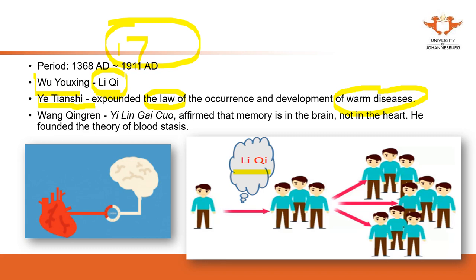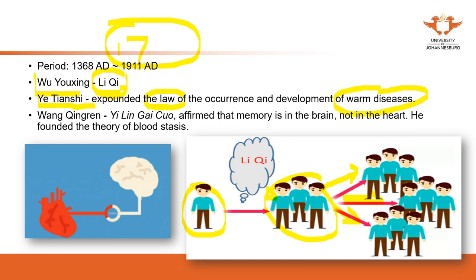They realized that people affected by Li Qi would show similar symptoms, and it could transfer from one patient to another with the same symptoms — this is essentially the concept of a pandemic. For example, COVID-19 is considered a Li Qi. Once you understand that Li Qi can transfer from person to person with similar symptoms, the key response is to stop contact — that's social distancing. These concepts were proposed even in the 17th century.